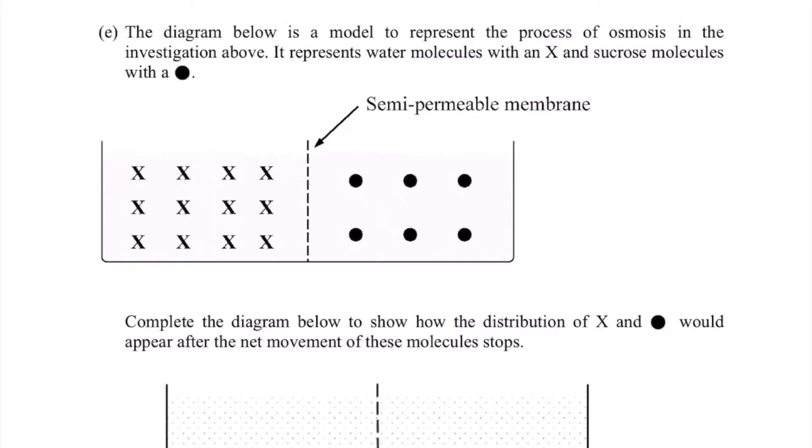The first part of the question asks us to look at the diagram below, a model to represent the process of osmosis in the investigation above. So it's relating to osmosis, that movement of water. From the investigation above we know that there's sucrose inside a dialysis tube and it's inside a solution of water.